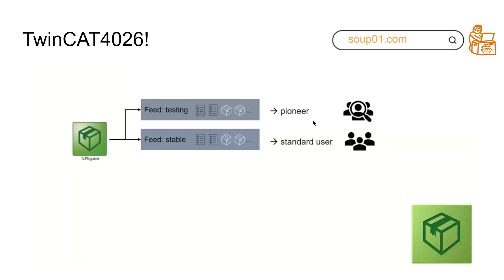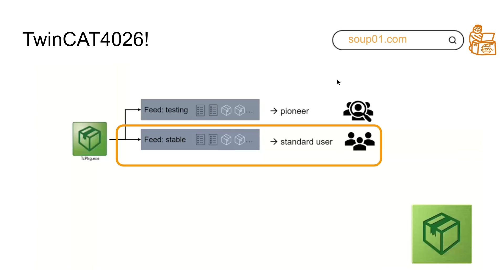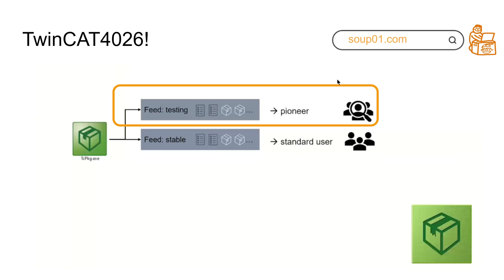Regarding how to get packages, the package manager is based on two feeds: 'stable' and 'testing.' The stable feed is for regular users — you can download the latest stable versions. The testing feed lets you download beta versions for testing new features, intended for special users.